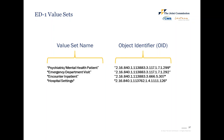Here we have the value sets for ED1. The psychiatric mental health diagnosis value set has more than 2,000 codes, whereas the emergency department visit only has one code and is used in several measures. The encounter inpatient value set has three codes and is used in several measures. Value sets may change with annual update based on terminology revision — if SNOMED CT, ICD-10, or LOINC retire or make a code invalid or create new codes, we need to modify the value set.